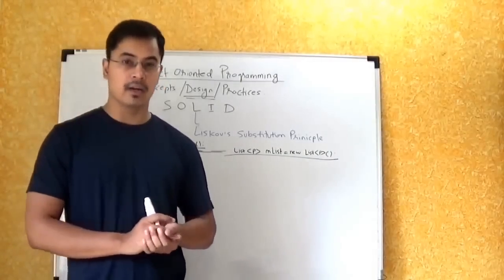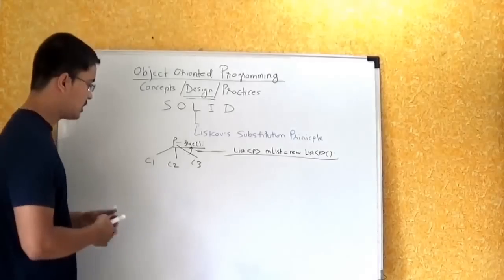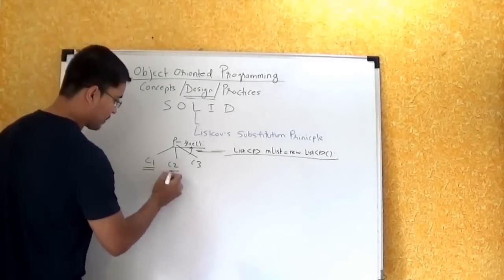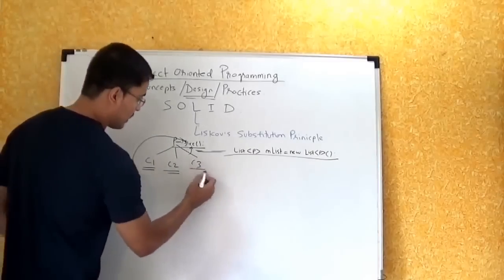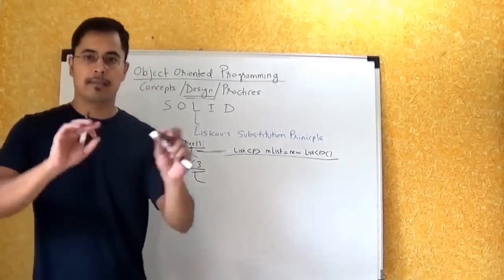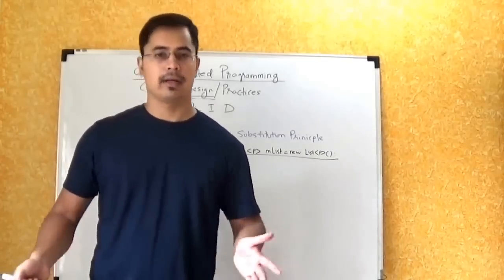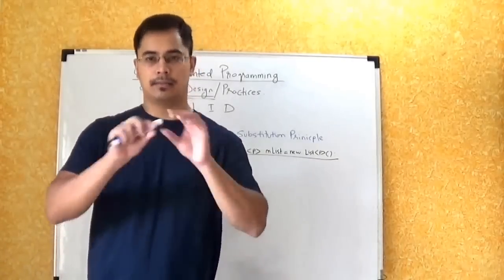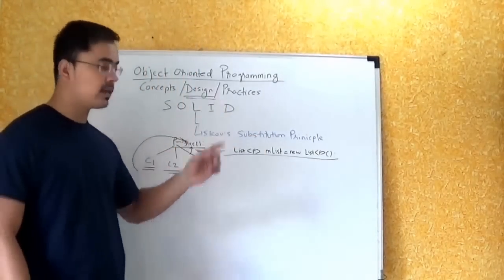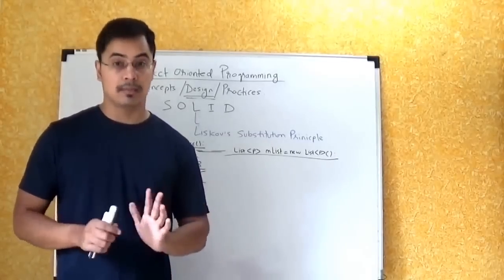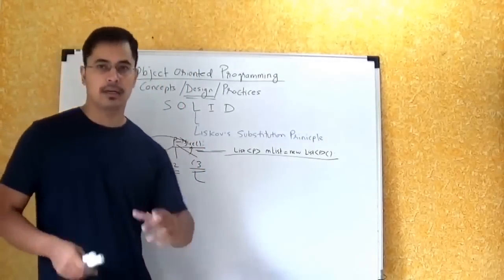Apart from that, the functionality should be meaningful. It should not be like two child classes provide the Fire functionality, but the third child class just prints 'I can provide Fire.' Basically it is not providing any functionality, just printing a statement. So technically it is not violating Liskov's Substitution Principle, but is it actually providing meaningful functionality for Fire? No.